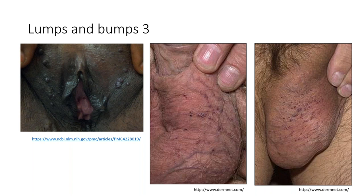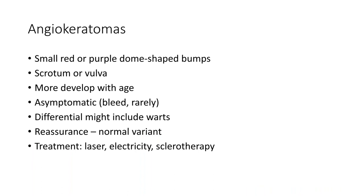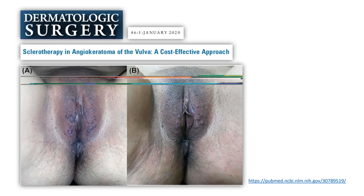The next lumps and bumps are angiokeratomas, also called Fordyce spots — very common red or purple dome-shaped bumps occurring most typically on the scrotum or vulva, more developed with age. They're asymptomatic but can bleed if traumatized. The differential might include warts. Reassurance is the best approach; patients can expect to develop more with time. Treatments including laser, electricity, or sclerotherapy are available as cosmetic or elective options.